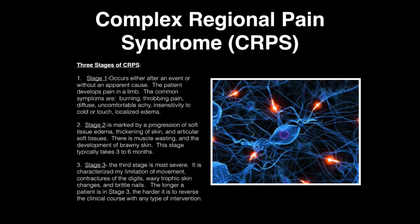Stage 2: there's a marked progression of soft tissue edema, thickening of the skin and articular soft tissues. There's muscle wasting and development of brawny skin. This typically takes three to six months.